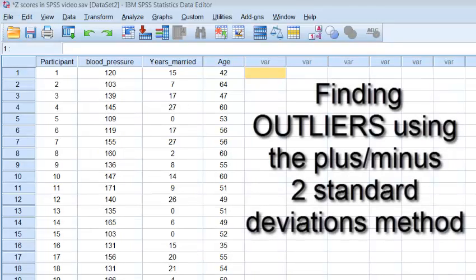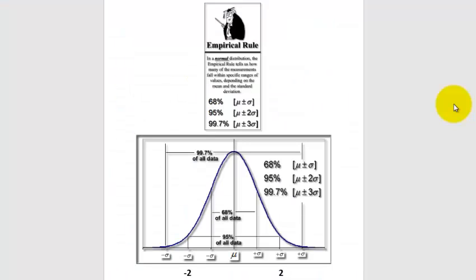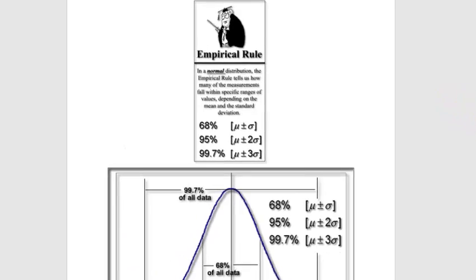Outliers using the two standard deviations method. Okay, so first off the bat, the reason we're going to use the two standard deviation method is because of the empirical rule. The empirical rule was designed by the Emperor of Statistics, but in a nutshell it says this: